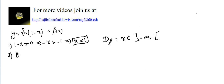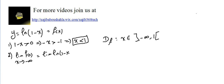Limit of f(x) as x approaches negative infinity equals the limit of ln(1 - x) as x approaches negative infinity. Substituting negative infinity for x, we get ln(1 + ∞) = ln(+∞), which equals plus infinity.